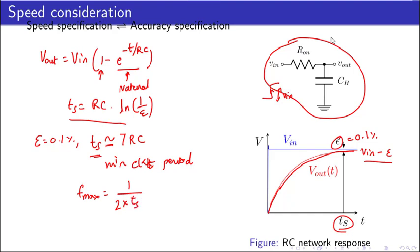The accuracy requirement — here 0.1% sampling error — constrains the minimum clock period and therefore the maximum speed of operation.